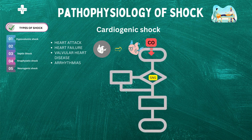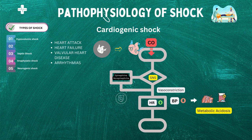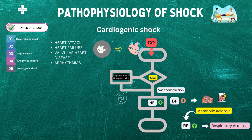The initial response to reduced cardiac output is the activation of the sympathetic nervous system, which triggers the release of catecholamines such as epinephrine and norepinephrine. These hormones act on the heart and blood vessels, causing an increase in heart rate and vasoconstriction, respectively. The goal of these responses is to maintain blood pressure and perfusion to vital organs such as the brain and heart. However, in cardiogenic shock, these compensatory mechanisms become inadequate and blood pressure begins to decline, leading to decreased tissue perfusion, cellular hypoxia, and metabolic acidosis. As the condition worsens, the heart may become ischemic and contractility may decrease, leading to a further decline in cardiac output.